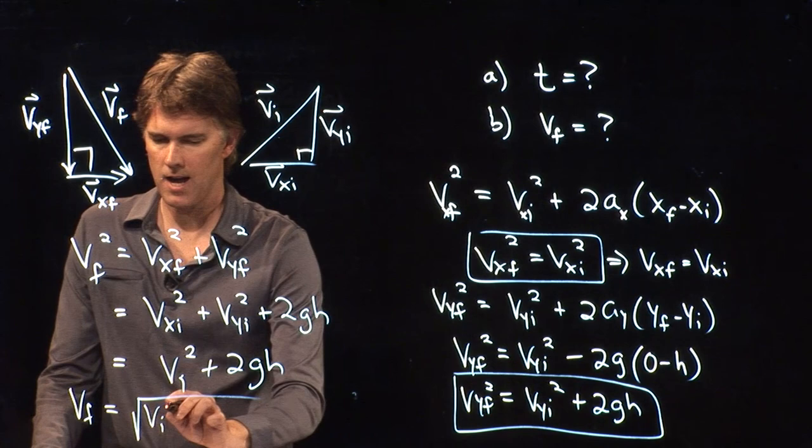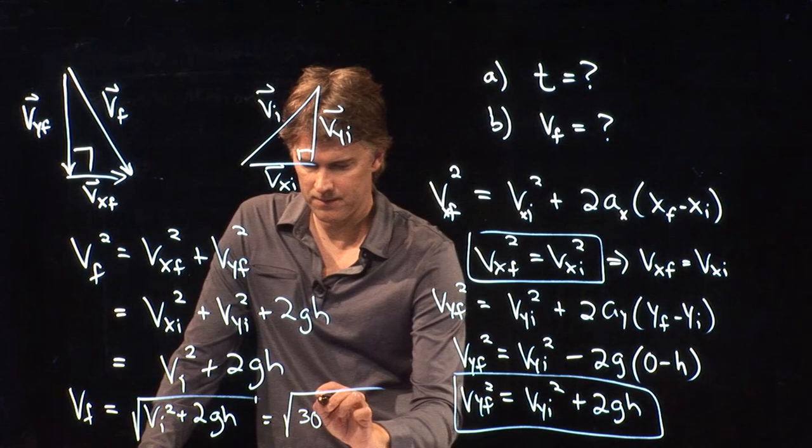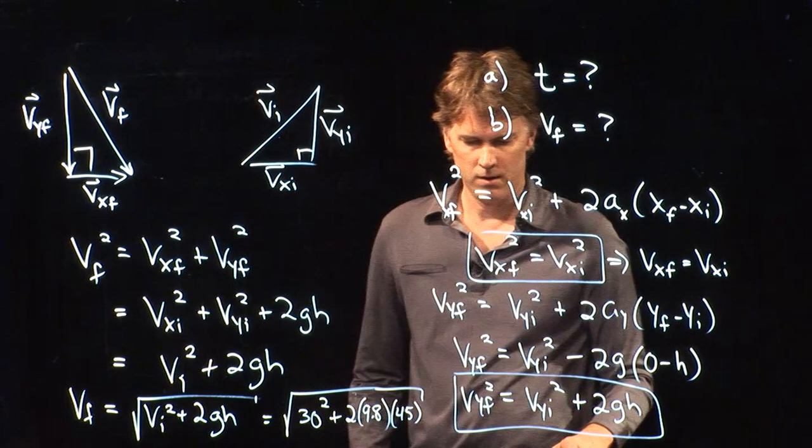Vf is going to be the square root of vi squared plus 2gh. Let's try the numbers and see what we get. So vi we said was 30. We've got a 2, 9.8 for g, and we said 45 meters for h.